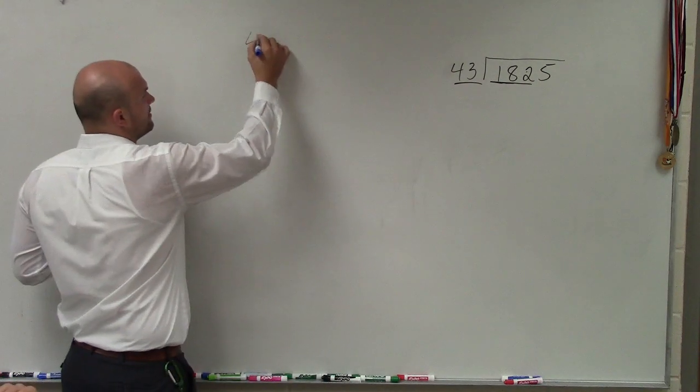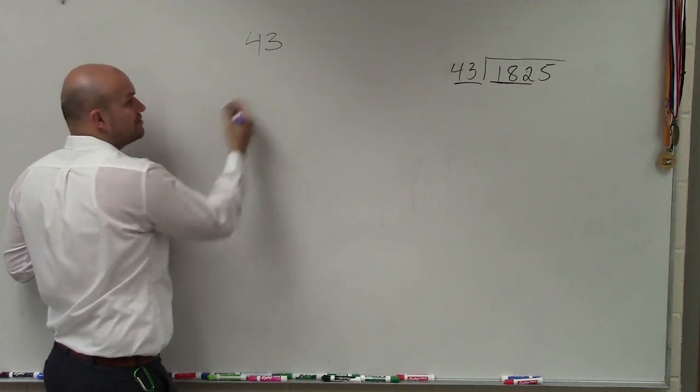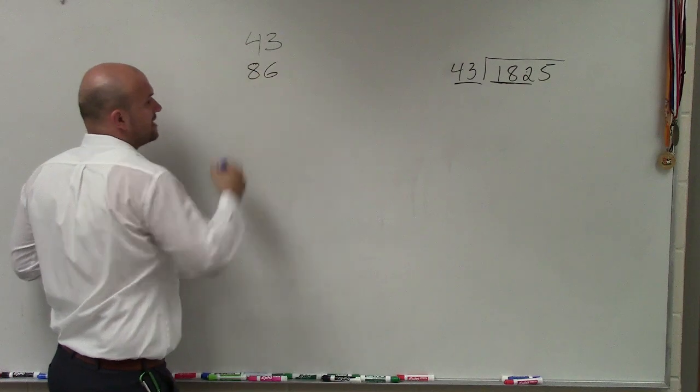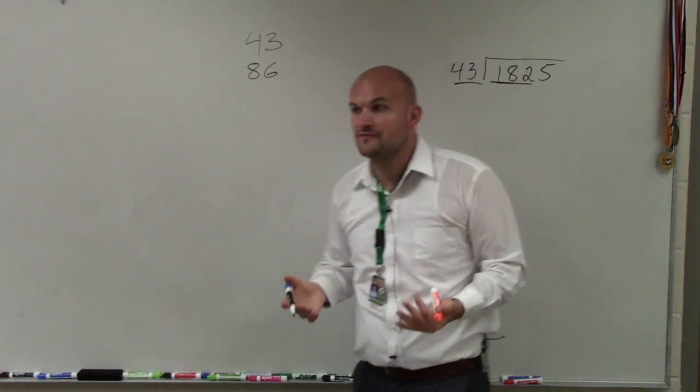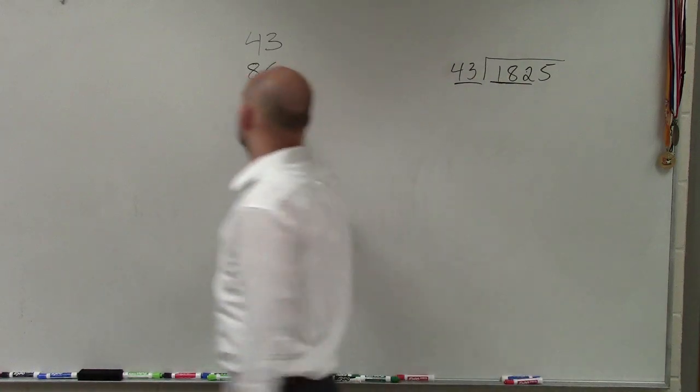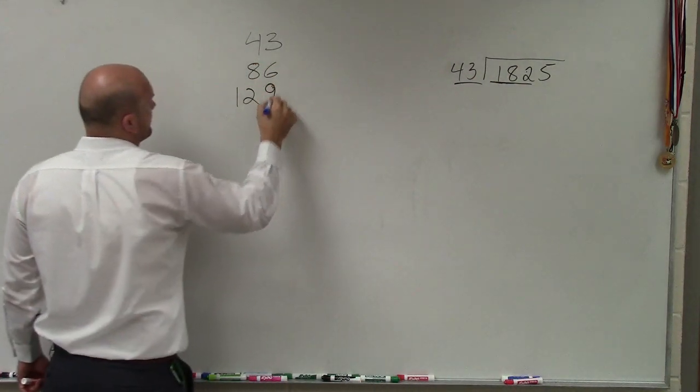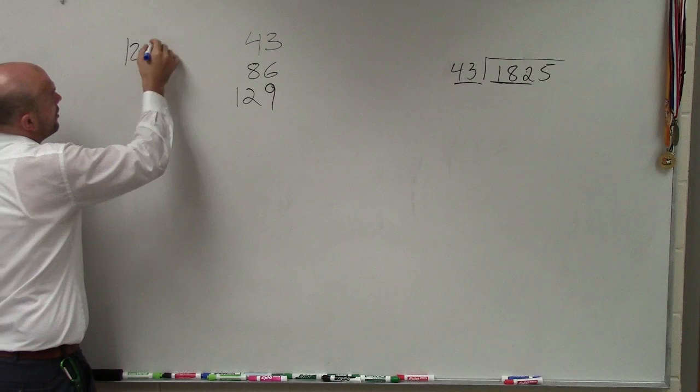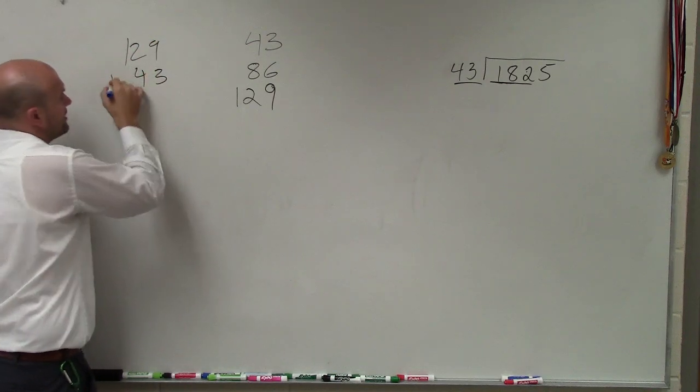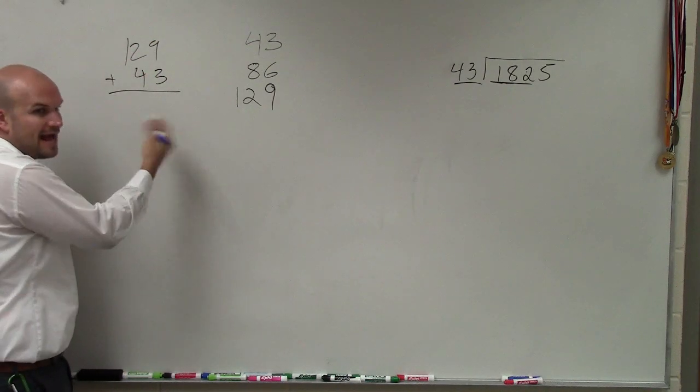So we have 43. And then 43 times 2 would be 86. And if I added another 43, I'd have 129. And then, again, if you forget it, say alright, 129 plus 43, right? And you just would keep on adding 43.